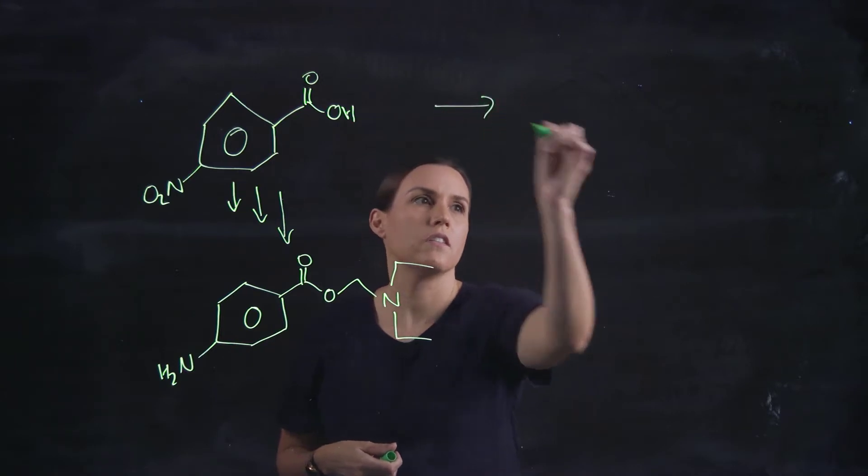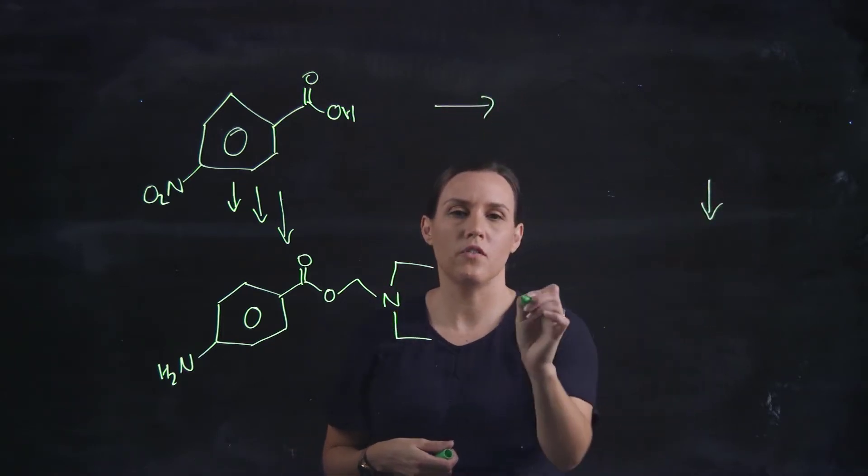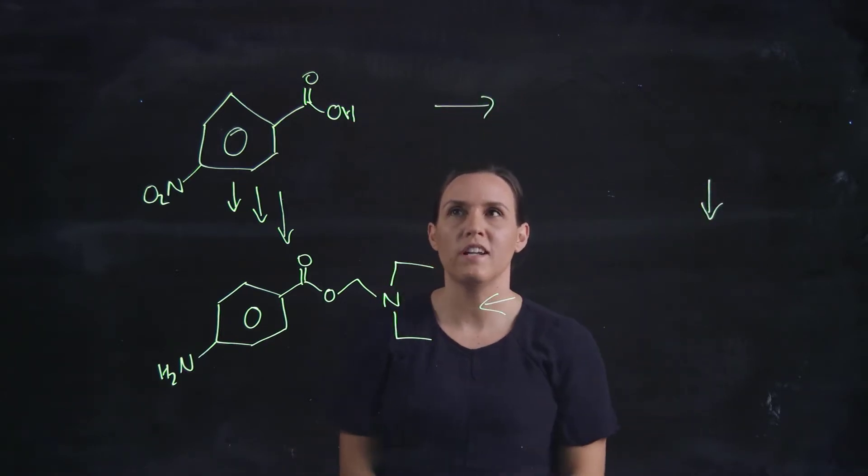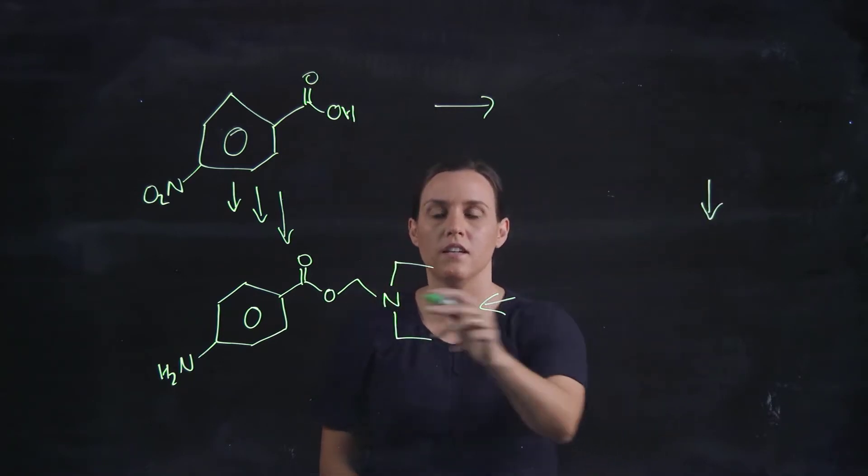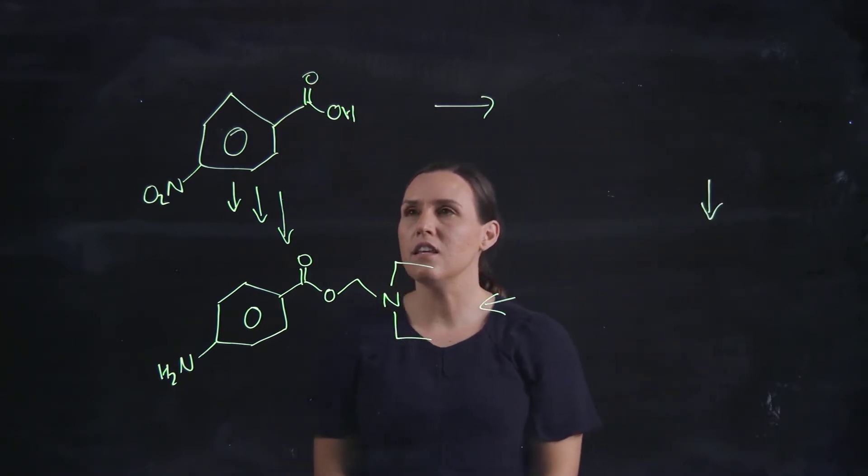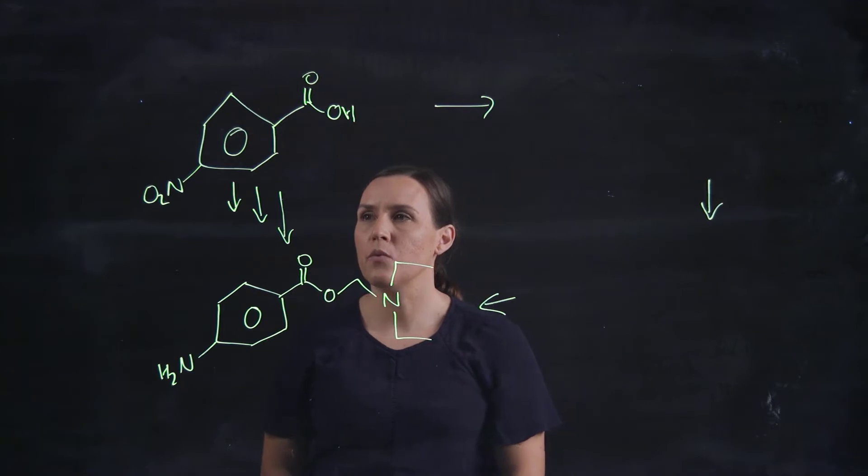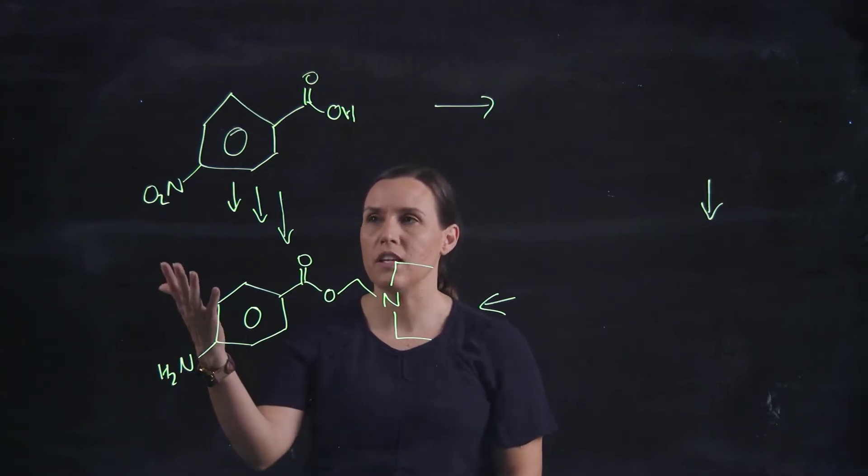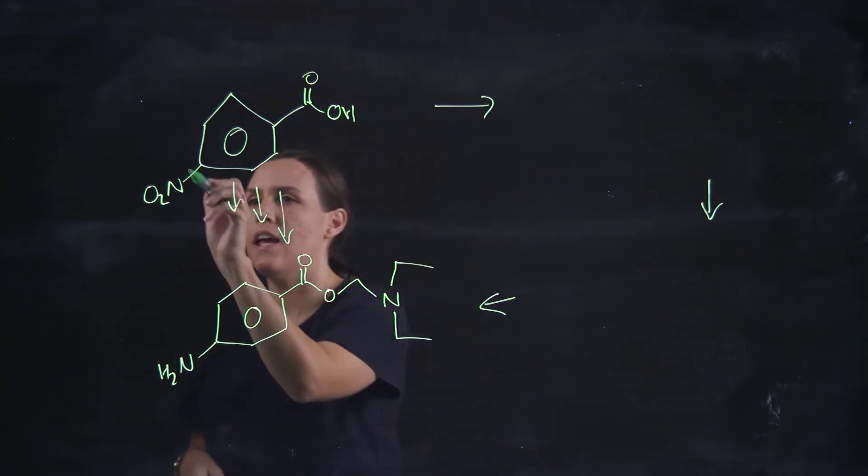So we know we've got three steps to get there, so let's draw in our arrows and we'll work this way here. So the last thing that you would do, we've got, what's different between these two, so we've got an NO2.